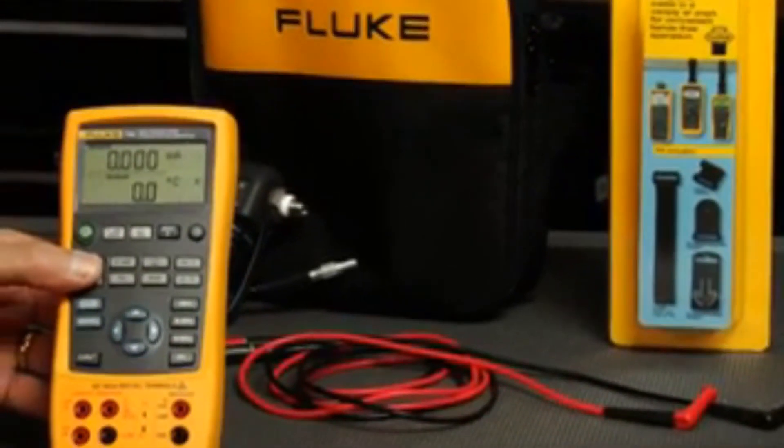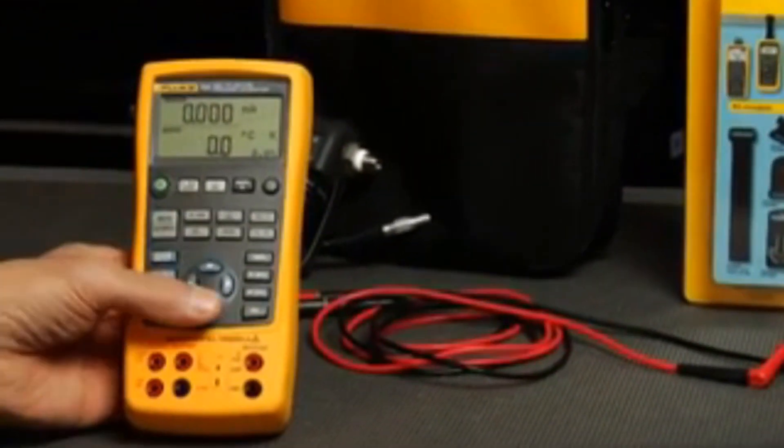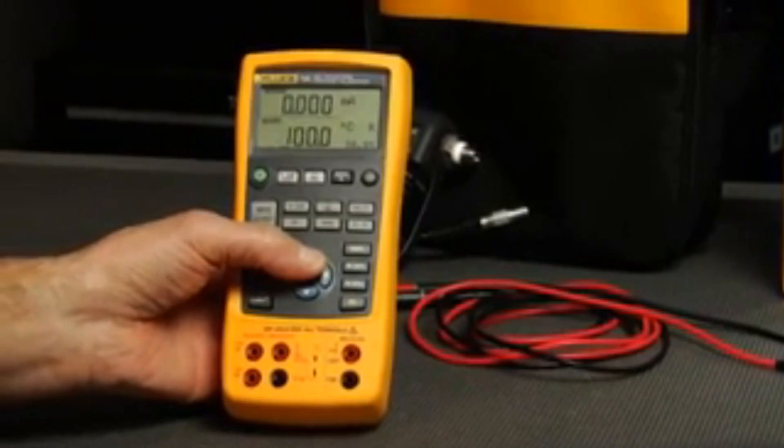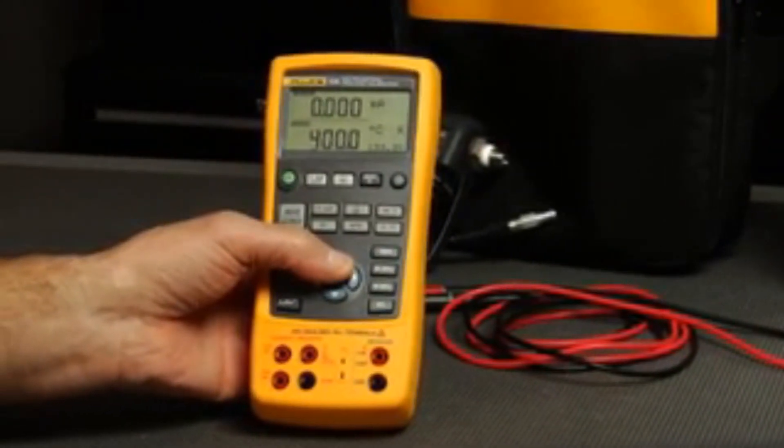Hi, I'm Jim Shields, and today we're going to take a look at the Fluke 725 multifunction process calibrator. The Fluke 725 is a great balance of power and simplicity. You can test and calibrate almost any process parameter without getting bogged down in complicated menus.